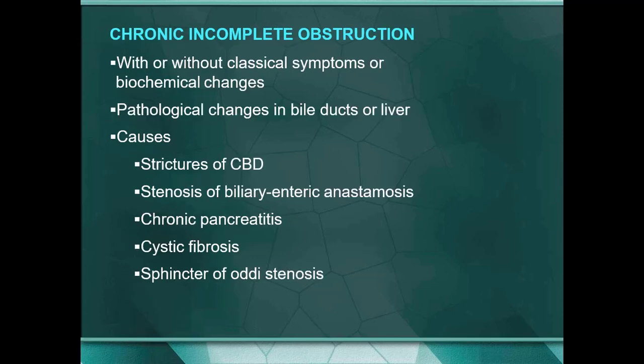Chronic incomplete obstruction may present with or without classical symptoms and biochemical or pathological changes in the bile ducts or liver. Causes include stricture of the common bile duct — most often related to surgeries, inflammation, or infection — stenosis of biliary-enteric anastomosis which is again post-surgical, chronic pancreatitis, cystic fibrosis, and sphincter of Oddi stenosis.